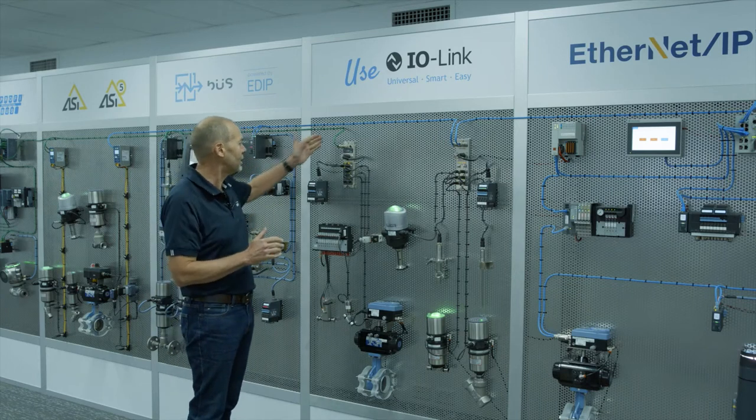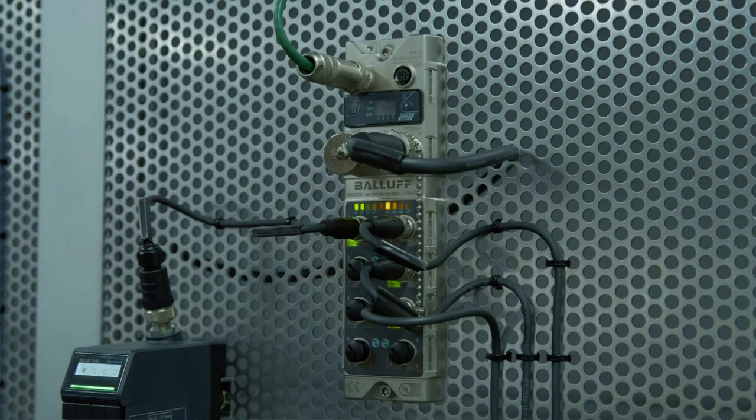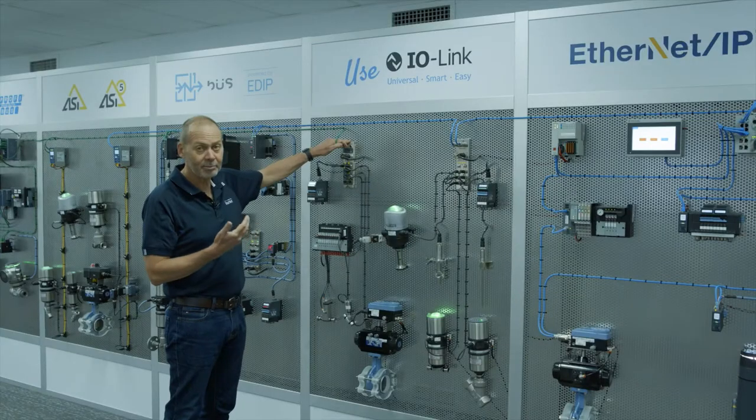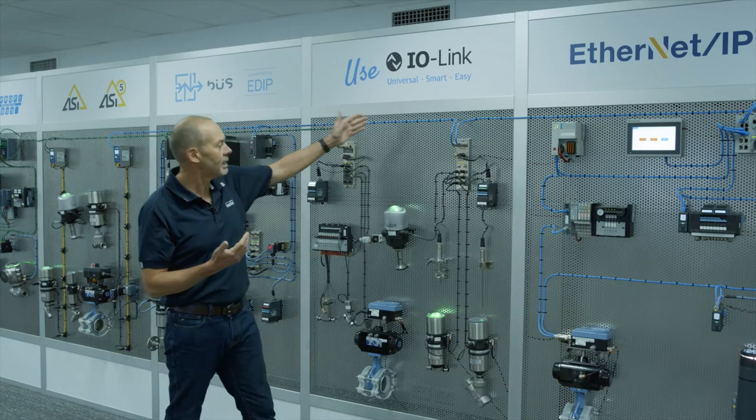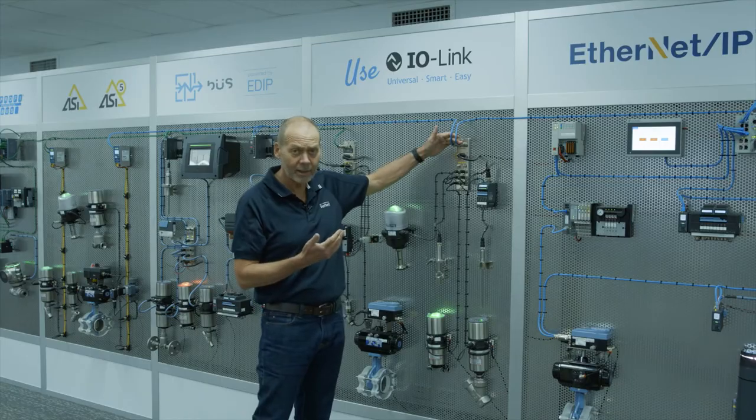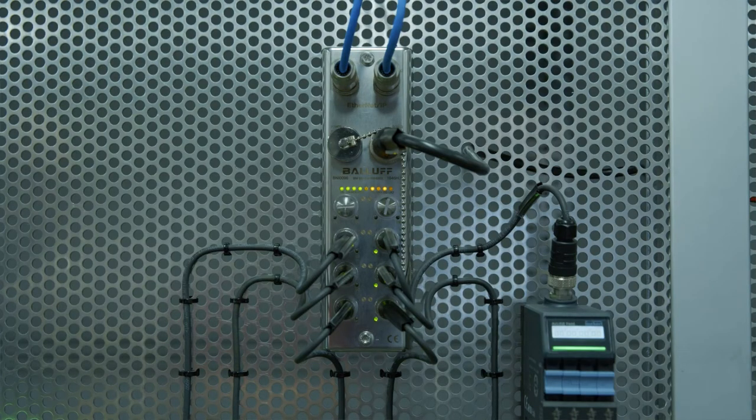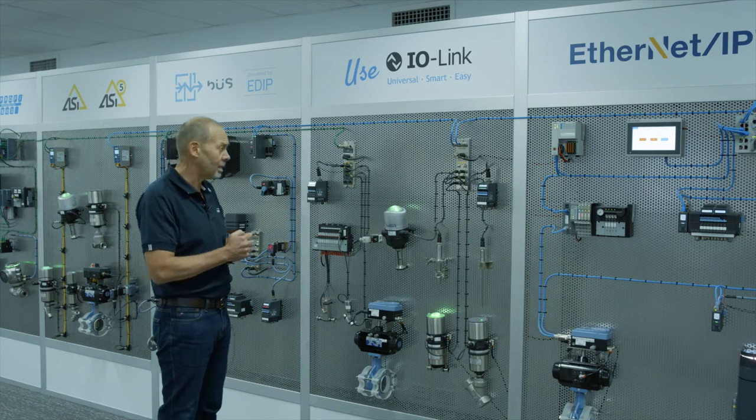It generally consists of blocks that are talking onto a main network like ProfiNet in this instance here, or on this side we have Ethernet IP. It could also be ProfiBus, there could be CC-Link, it could be other networks.